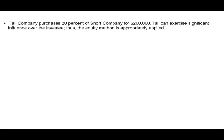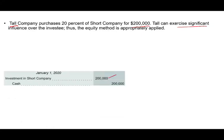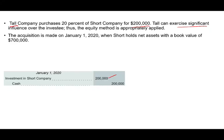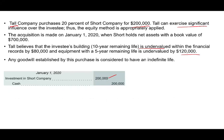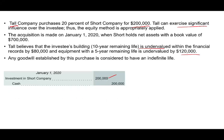Let's work a comprehensive example. Toll Company purchased 20% of Short Company for $200,000, and we are told they can exercise significant influence. To record the purchase: debit Investment in Short Company, credit Cash — straightforward. The acquisition was made on January 1st when Short Company's net book value equaled $700,000 (assets minus liabilities). Toll Company believes the investee's building is undervalued by $80,000 (10-year life) and equipment is undervalued by $120,000 (5-year life). Any goodwill established is considered to have an indefinite life.